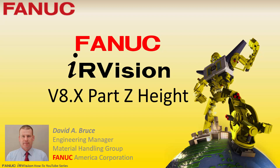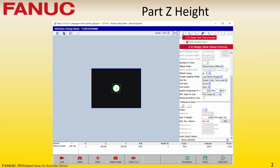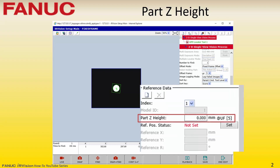The following presentation will explain how to properly set the part Z height in an IRVision vision process. The key to getting accurate information from a vision process is to properly calibrate the camera and set the part Z height information correctly in the vision process.